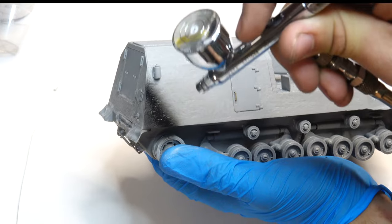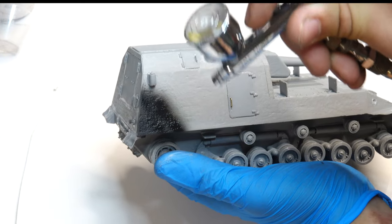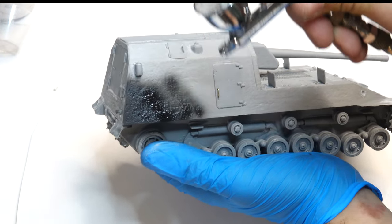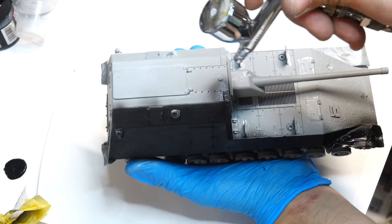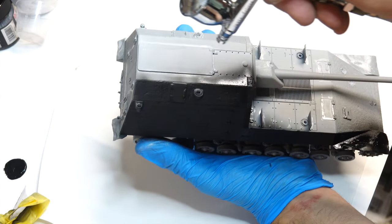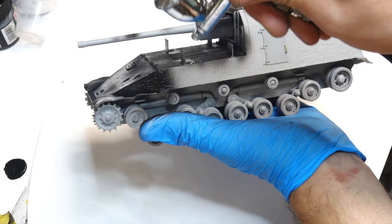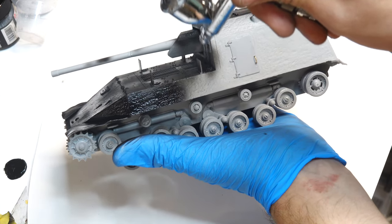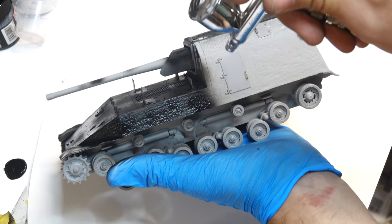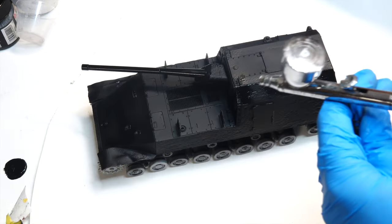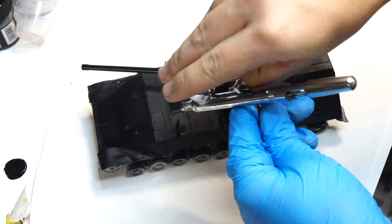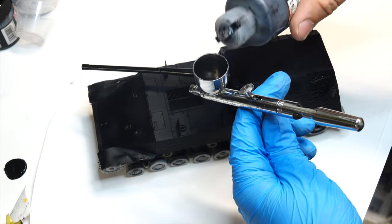There are a few reasons to prime our models. Primarily it provides a good base for following paint, but it also unifies the surface and allows you to spot any imperfections. I almost exclusively use black primer in most of my models, as it provides a great base coat for pre-shading, and in most cases provides great contrast, so I don't miss any spots with my actual painting.